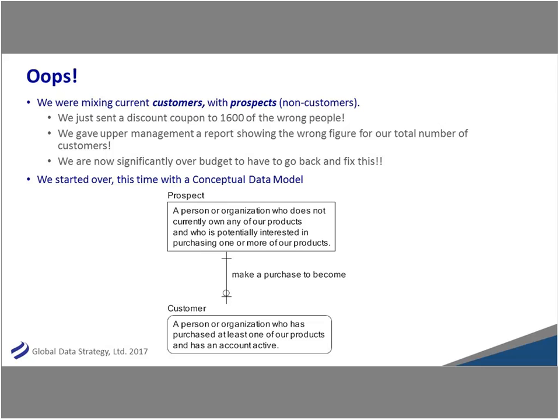So this time we started again with a conceptual data model with our definition. A prospect is a person or organization who doesn't own a product but is looking at it, and a customer is someone who does and has an active account. Super simple business definition, but very, very important business results. And the other thing is — this doesn't have to take forever. It can take some iterations, but sometimes it's an afternoon of whiteboarding, and just taking that first step can go a long way. I wouldn't be afraid of starting — sometimes you can just flesh out some really simple stuff with a simple whiteboard in an afternoon.